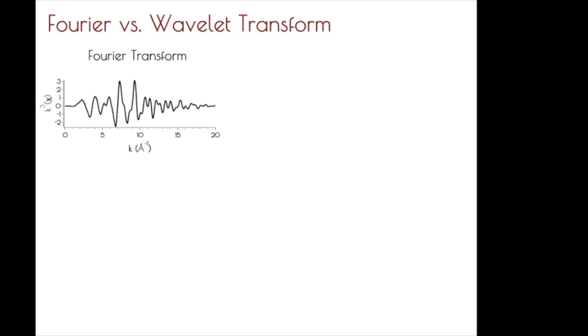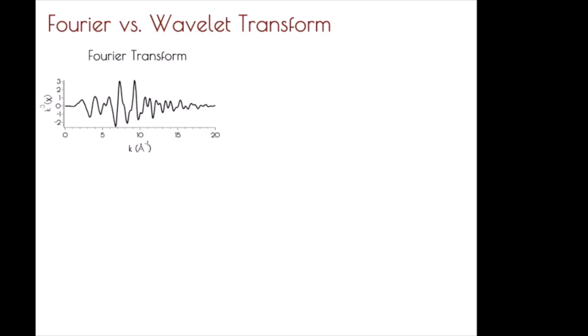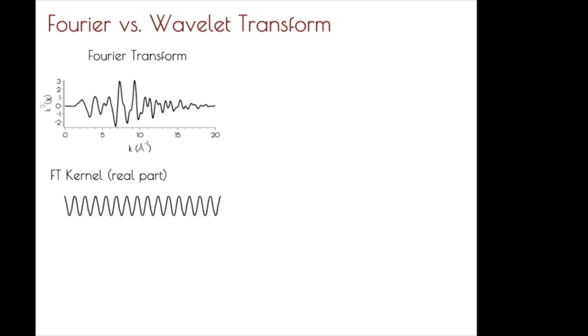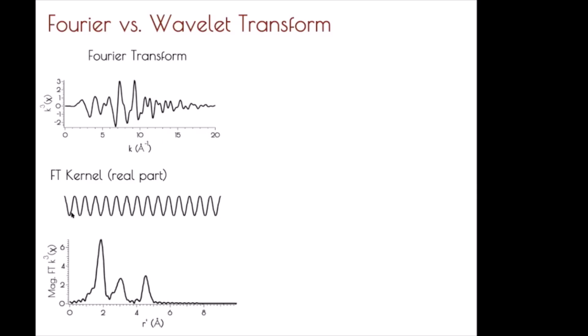What I'm going to do now is talk about what a wavelet transform is versus a standard Fourier transform. We're all familiar with Fourier transforms in XAFS analysis — you apply a complex wave function to your XAFS data and get the conversion from K space to R space. But because of the nature of the Fourier transform, you lose information in K space when you transform to R space — specifically, you don't know where the various peaks are maximizing in K space.